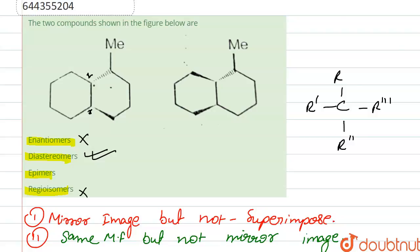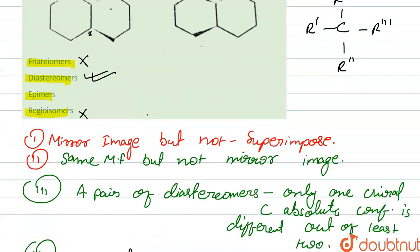Here we can see that there are two chiral carbons. In the first structure, one carbon has a plain and dashed line configuration; in the second structure the same carbon has a wedge line. Moving to the second chiral carbon, it also has a different configuration between the two structures. Since two chiral carbons have different configurations — not just one — it is not epimers. Therefore, our correct answer is diastereomers, option B.